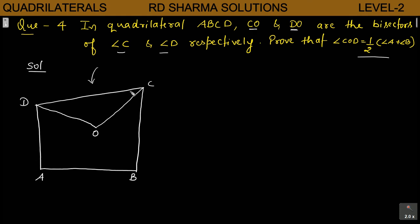That means यह Angle इसके बराबर होगा और यह Angle इसके बराबर होगा. तो आपको prove करना है Angle COD — यह वाला Angle — यह किसके बराबर होगा? Half of Angle A plus Angle B.